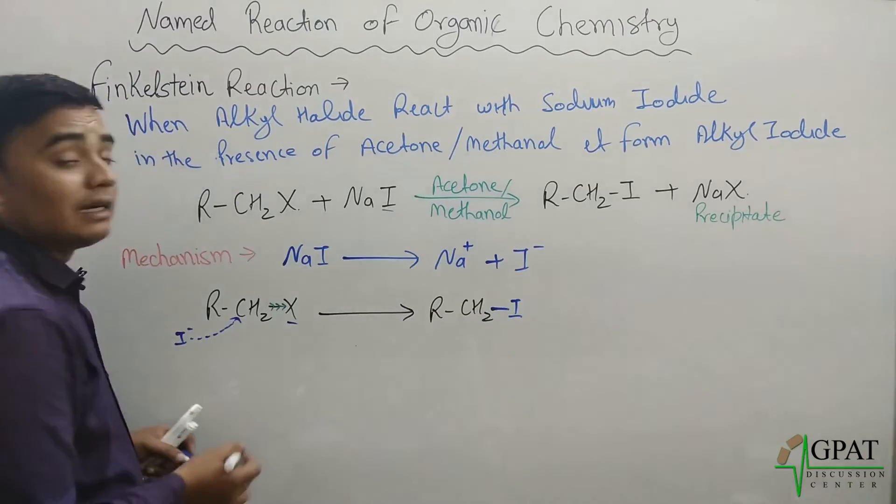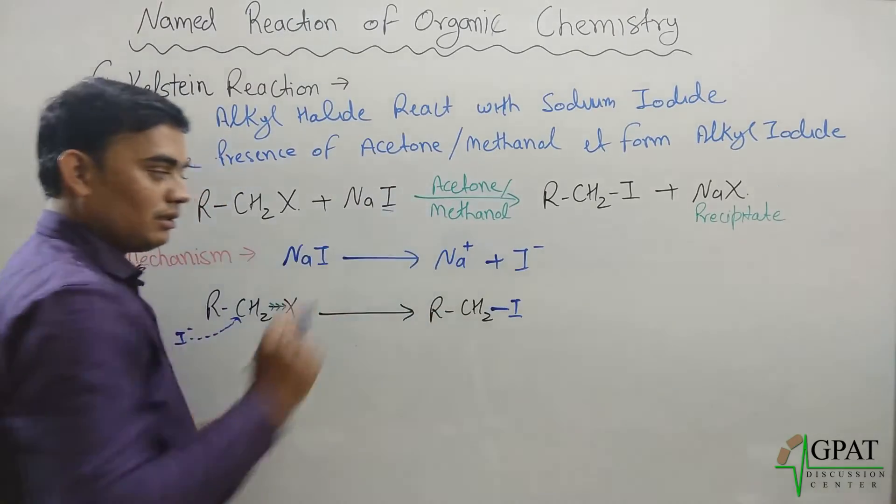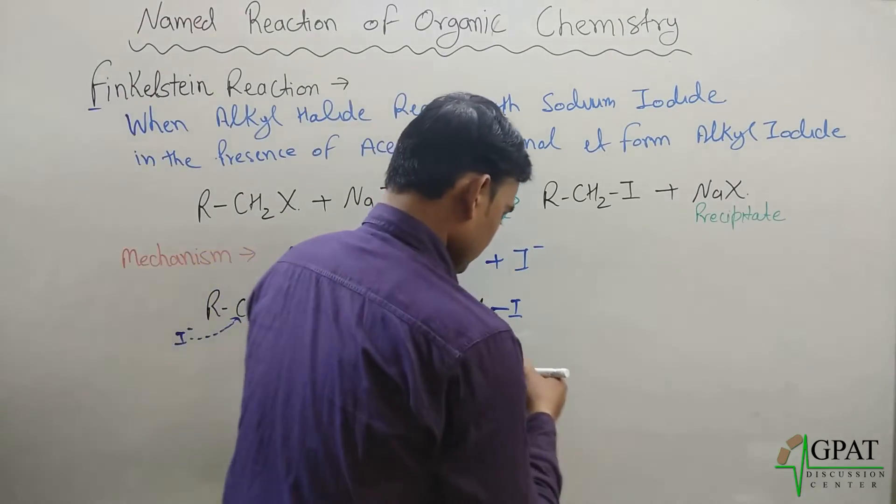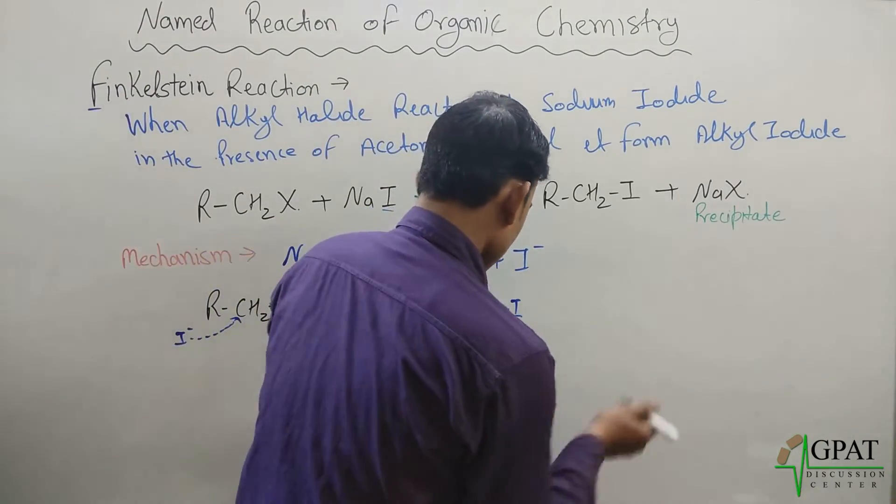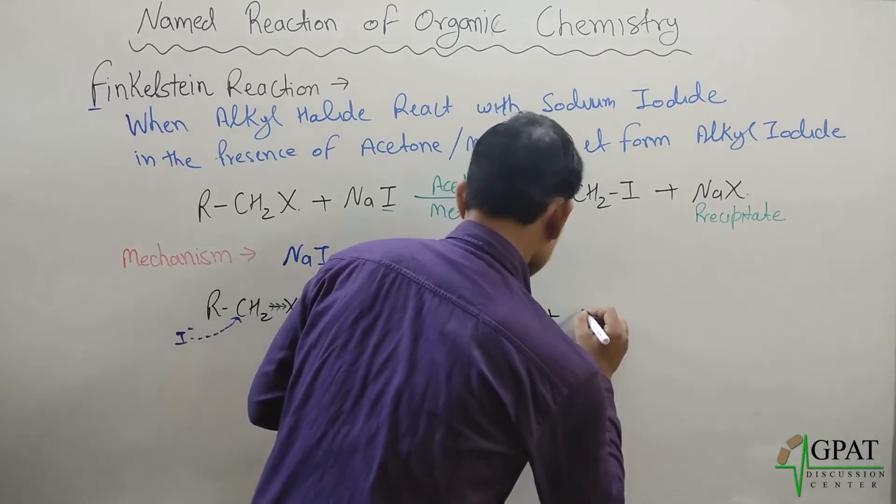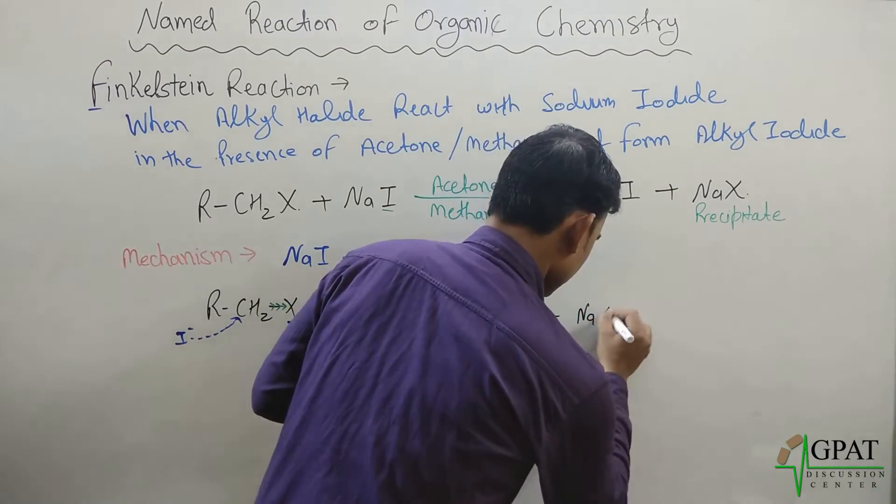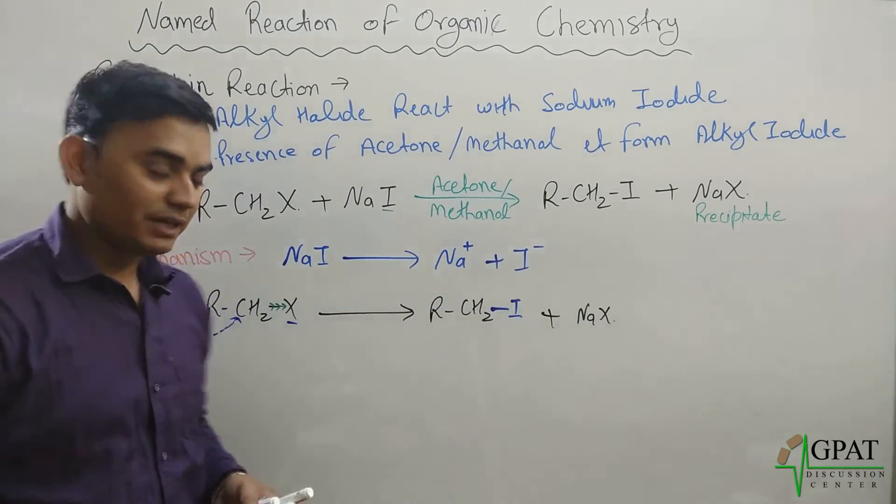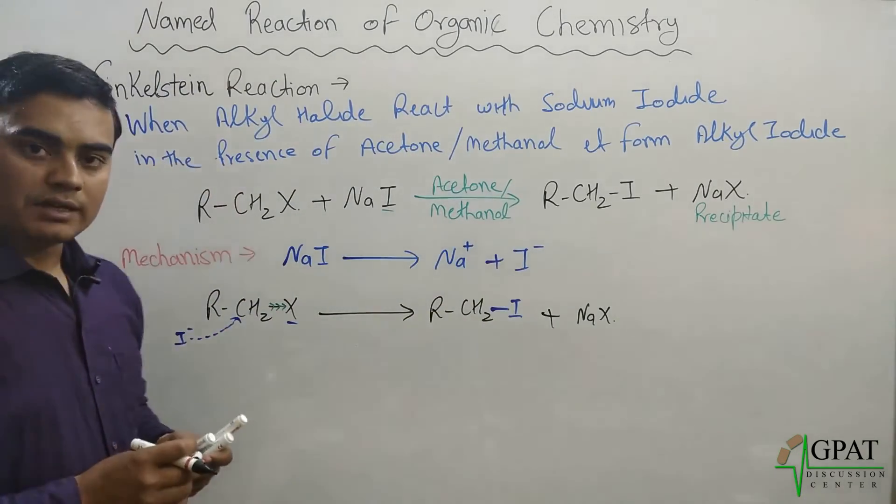By this resultant, R-CH2 forms a bond with iodine, R-CH2-I means alkyl iodide. Now this halide will form a bond with this sodium, sodium halide, and that will be removed out in the form of precipitate.